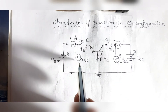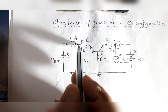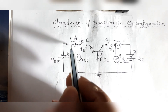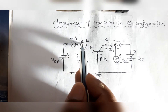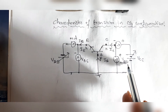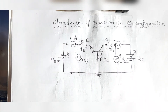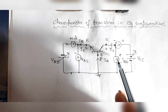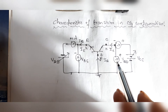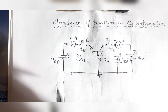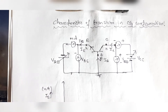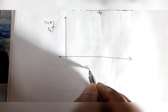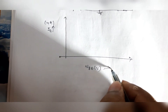To draw the input characteristics, VBE is the input voltage and IE is the input current. The input voltage VBE is varied in steps, and the corresponding emitter current IE is noted for fixed values of VCB. The experiment is repeated for different fixed values of VCB, and the graph is plotted. A typical input characteristics curve looks like this.